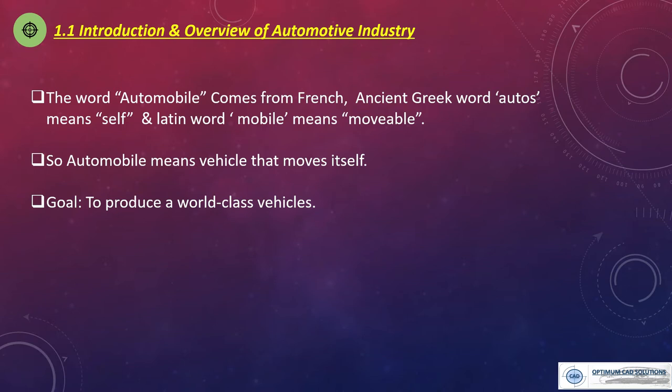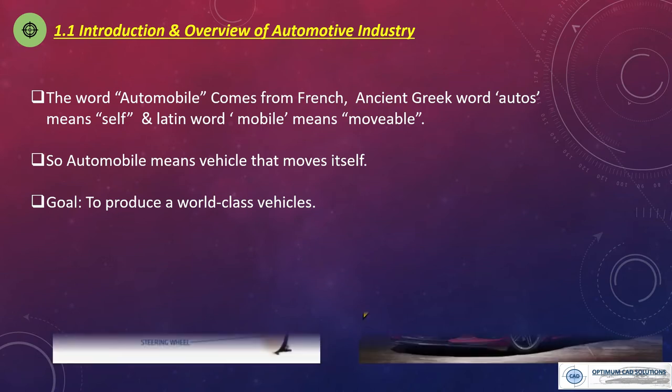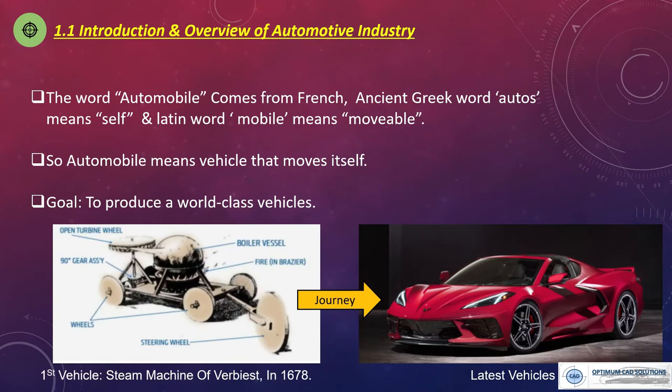The automaker first conducts a market study, analyses the customer requirement, styles the vehicle as per the requirement, and then tests the new concept vehicle. Engineers and designers then incorporate the critical information into a vehicle design. Finally we get a safe, stronger, and reliable vehicle. The designing and engineering of a vehicle must meet customer satisfaction. You can see the journey of a vehicle from the first vehicle in the world to the latest vehicle available in the market.